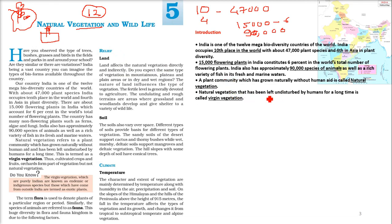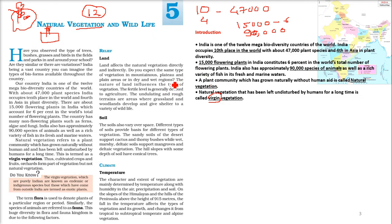Natural vegetation that has been left undisturbed by humans for a long time — the vegetation which is virgin, meaning it has not been touched yet, with no human intervention — is called virgin vegetation.